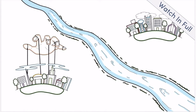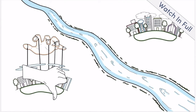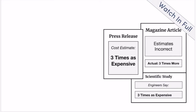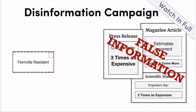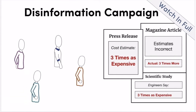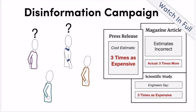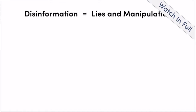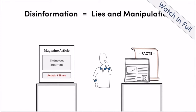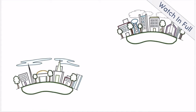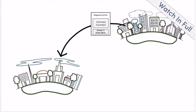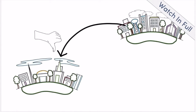They successfully manipulated Fernville into rejecting the bridge by spreading false information. This is called a disinformation campaign. Disinformation is false information that is published and shared with the goal to deceive people and cause them to support a particular person, issue, or organization that they may not otherwise support. The problem is that disinformation is based on lies and manipulation of facts. It causes people to lose trust in newspapers who report the information needed to make sound decisions. As in the bridge example, it can mean one town or country can unfairly control another and cause them to vote against their own interests.